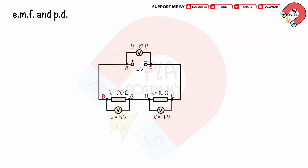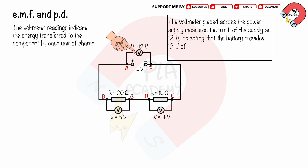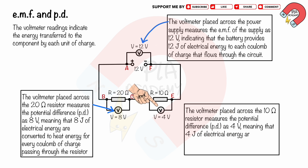The circuit diagram is shown. The voltmeter readings across each resistor and power supply indicate the energy transferred to the component by each unit of charge. The voltmeter placed across the power supply measures the EMF as 12 volts, indicating the battery provides 12 joules of electrical energy to each coulomb of charge. The voltmeter across the 20 ohm resistor measures a PD of 8 volts, meaning 8 joules of electrical energy are converted to heat for every coulomb. The voltmeter across the 10 ohm resistor measures a PD of 4 volts, meaning 4 joules are converted to heat for every coulomb.